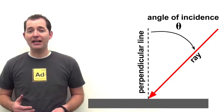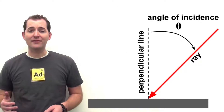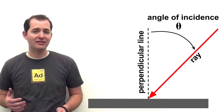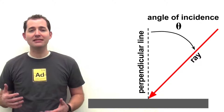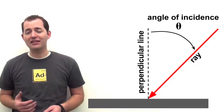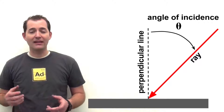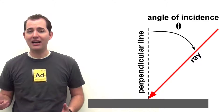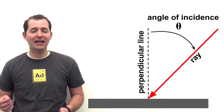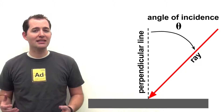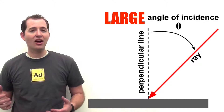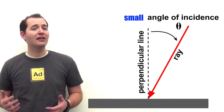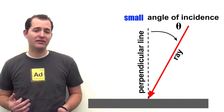As you can see in this diagram, we have our surface and a line perpendicular to that surface. We also have a ray incident, or hitting, that surface. The angle of incidence is the angle between the perpendicular line and that ray. Here we can see what a large angle of incidence looks like compared to a small angle of incidence.